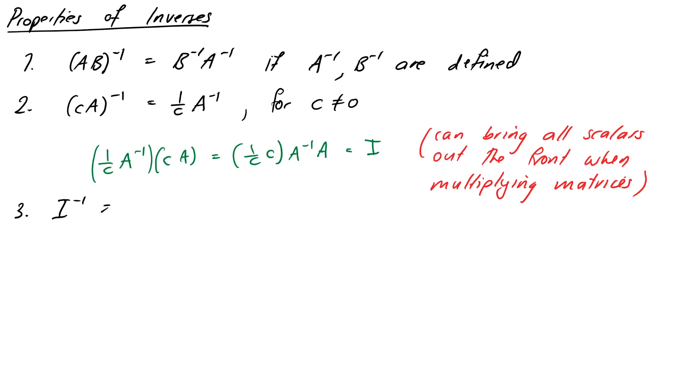Property number three, the inverse is its own identity. If you try and invert that, you just get itself.